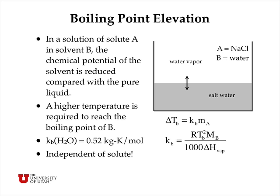Similarly, for the boiling point elevation in a solution of solute A and solvent B, the chemical potential of the solvent is reduced compared with the pure liquid. So a higher temperature is required to reach the boiling point of B, the water. The delta T in the boiling point is equal to Kb, the boiling point elevation constant, times the molality of the solute in the water. The boiling point elevation constant Kb depends only on the properties of the water and is independent of the solute, to a good approximation.